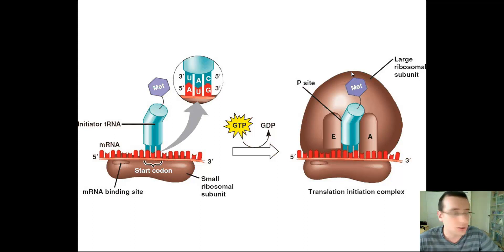When this is found, another set of initiation factors will facilitate the process of connection of a transfer RNA which has the proper anticodon to match the start codon and will be carrying methionine. Then, the large subunit will bind itself on top of that with the help of other initiation factors. All of this will be spending energy, and that makes the initiation complex.